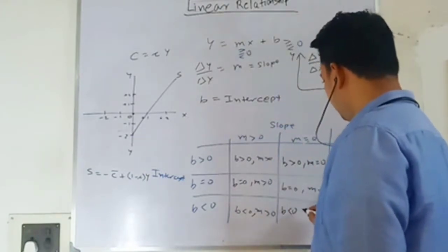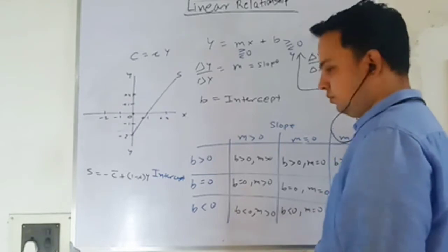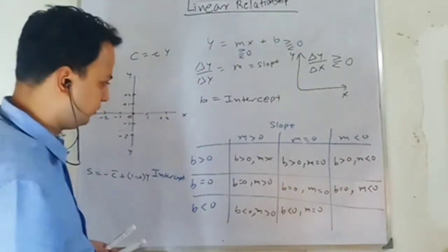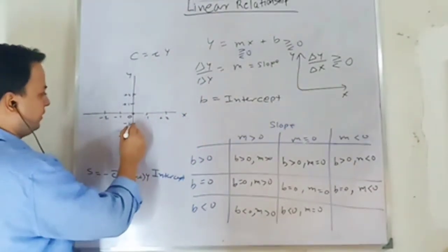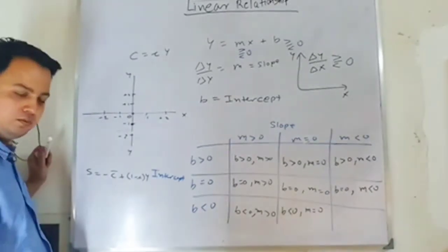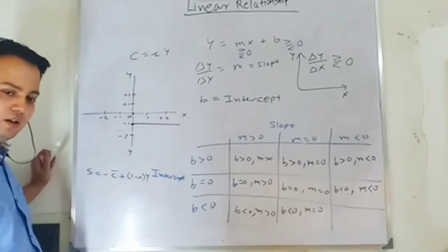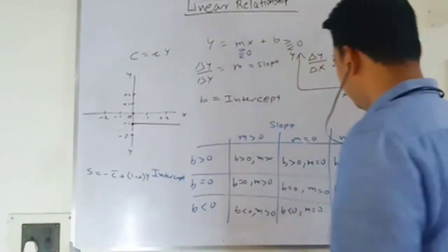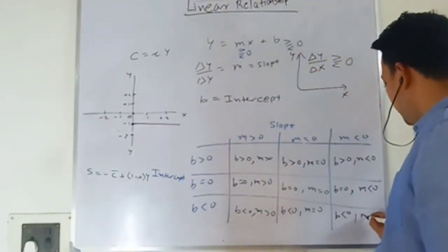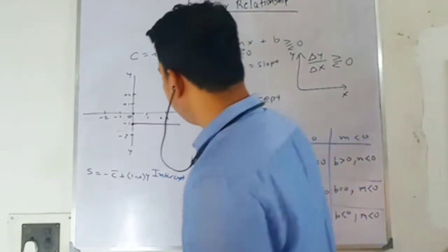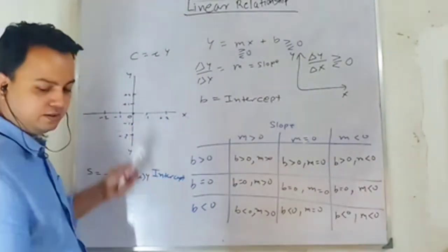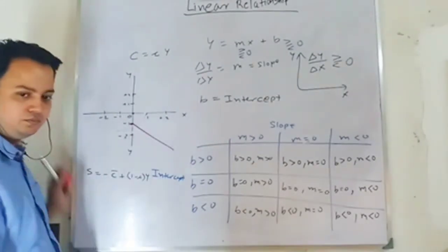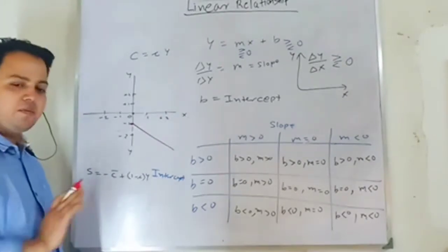When b is less than zero and m equals zero, say b is minus one, you draw a horizontal line below the x-axis. And when b is less than zero and m is also less than zero, say b is minus one and slope is negative, you get a line that starts below the origin and slopes downward. The steepness or flatness of the line depends on elasticity.